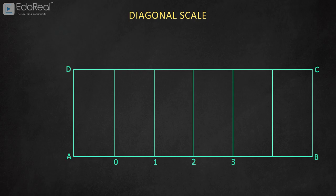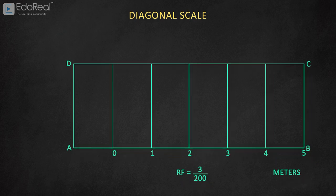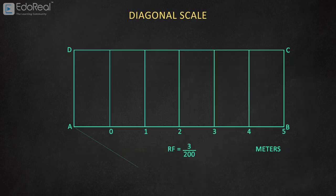Here each section measures 1 meter. We can now mark the main units as 0 to 5 to the right of the scale. Mention the main unit meters to the right of the scale, and mention RF in the middle. Follow the same procedure that we have followed in the plane scale to divide the line into equal parts.